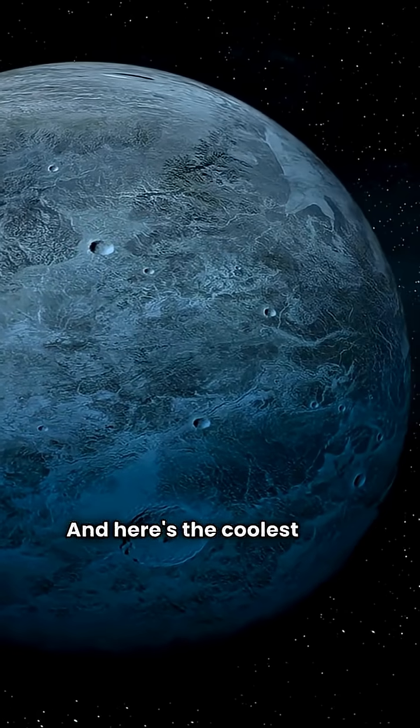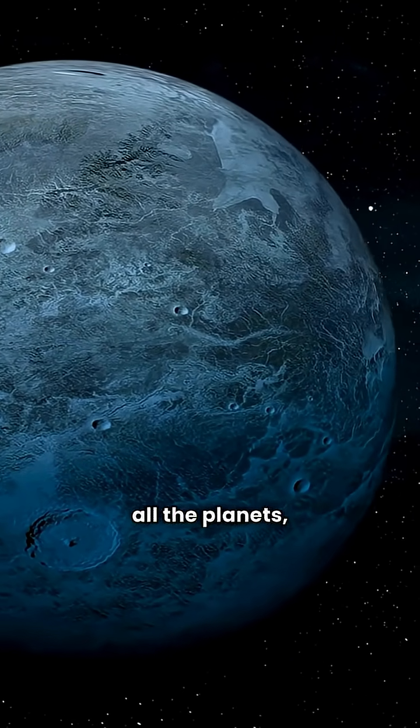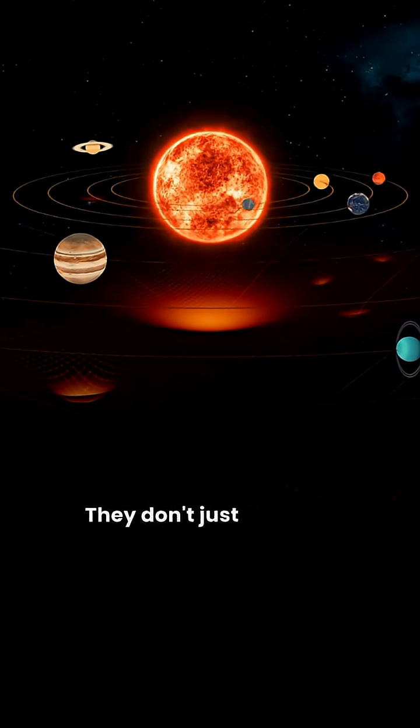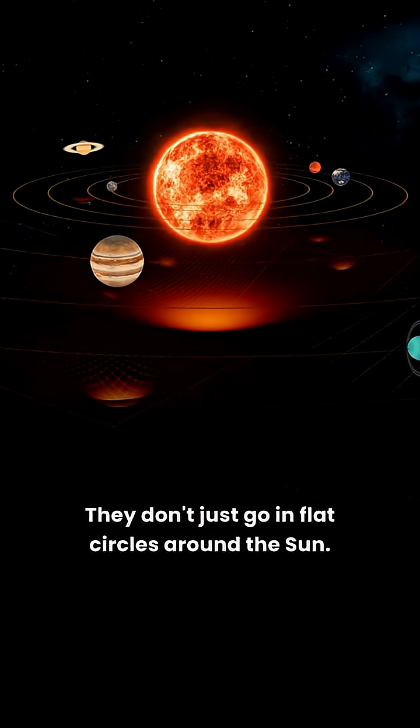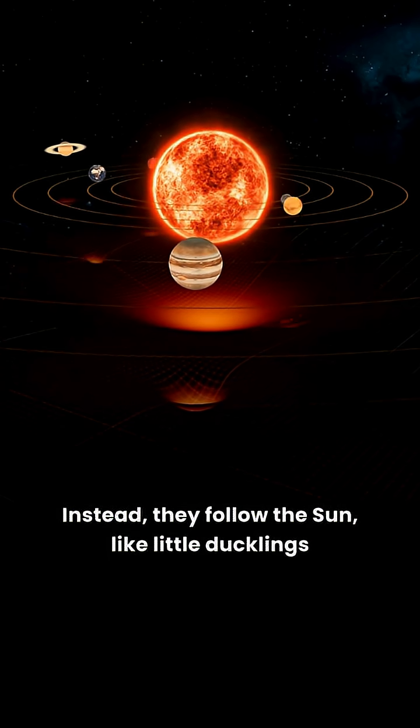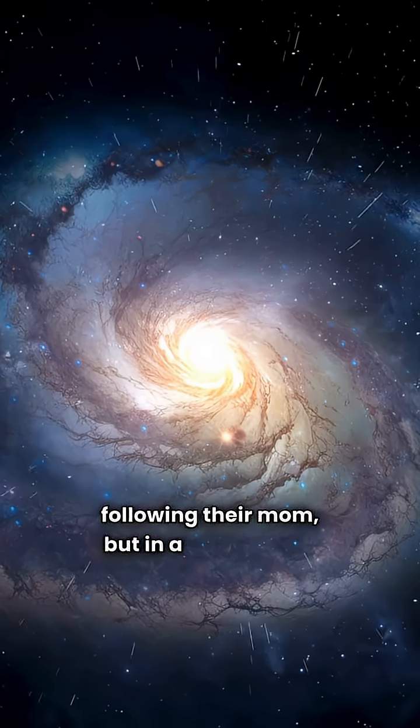And here's the coolest part. All the planets, including our Earth, are coming along for the ride. They don't just go in flat circles around the sun. Instead, they follow the sun, like little ducklings following their mom, but in a giant spiral.